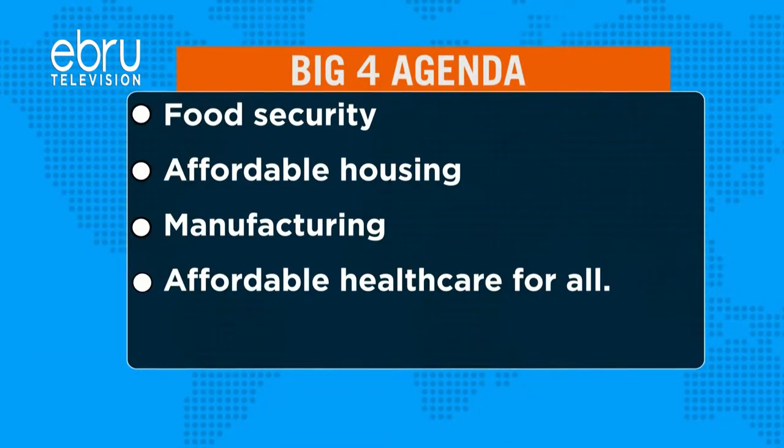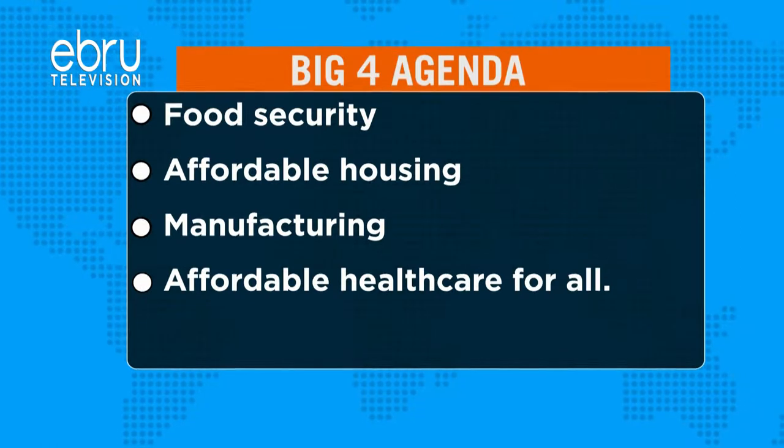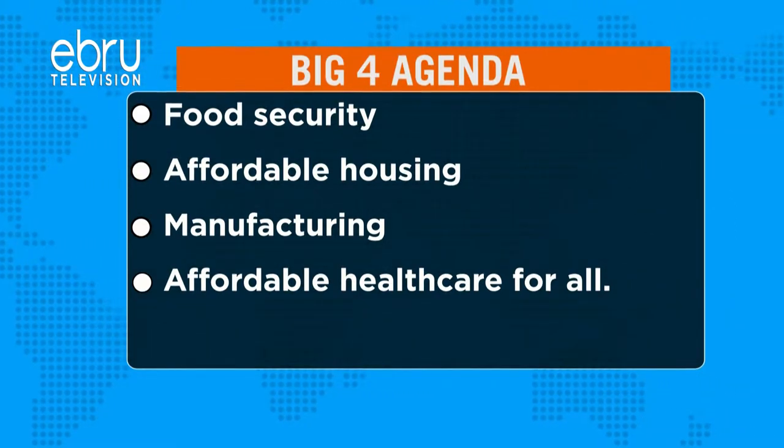Agriculture is one of the pillars in the government's big four agenda, and there is need for such methods to realize these goals. These diseases spread very fast, because they spread both by cuttings when farmers buy cuttings from one farm to another, and also by vectors, especially whitefly. It has been difficult to manage them because farmers need to recognize, identify, and correctly diagnose these diseases and pests before they can manage them.